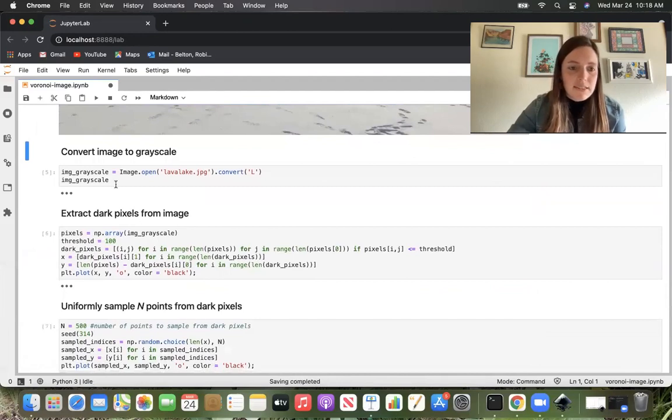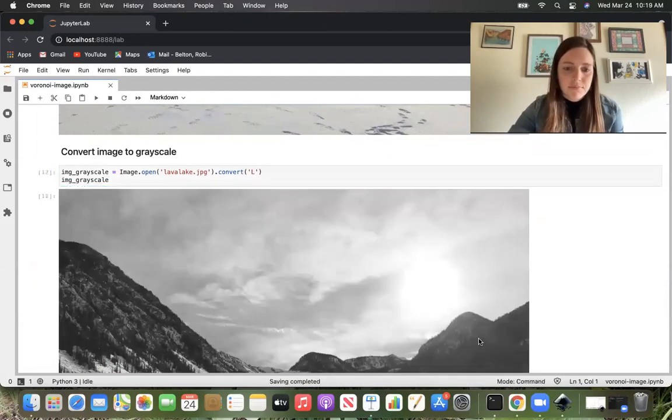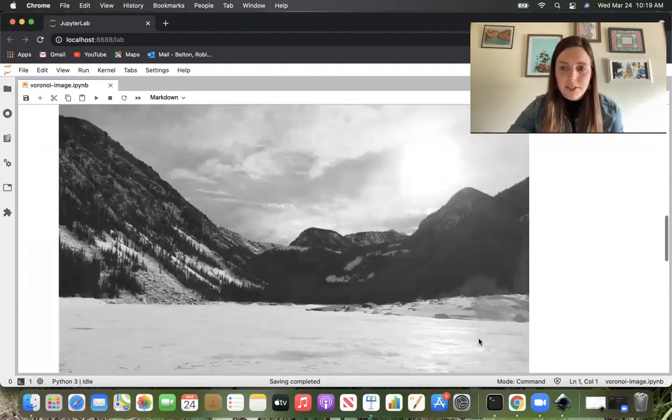To make our lives a little easier, I'm going to convert the image into a grayscale image. So now we have the grayscale image.